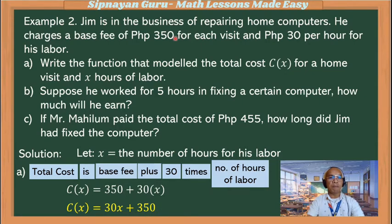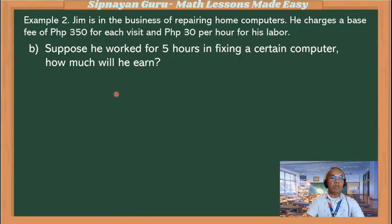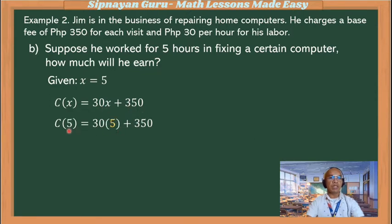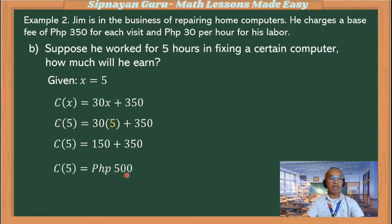Second question: suppose he worked for 5 hours, how much will he earn? The number of hours of labor is 5. Our function is c(x) = 30x + 350. So c(5) = 30 times 5 plus 350. That is 150 plus 350, and 150 plus 350 is 500.